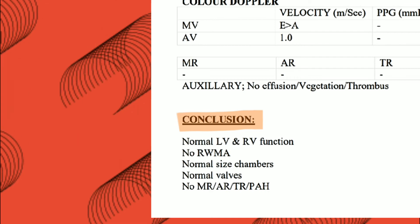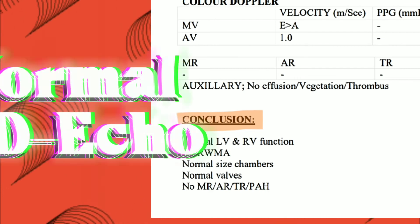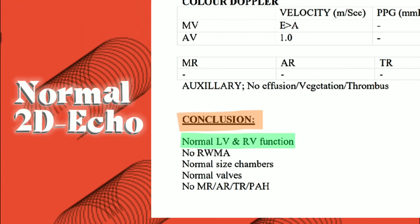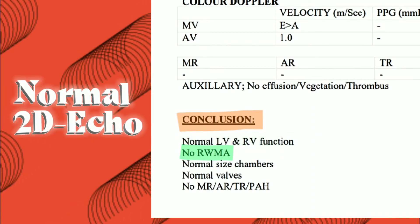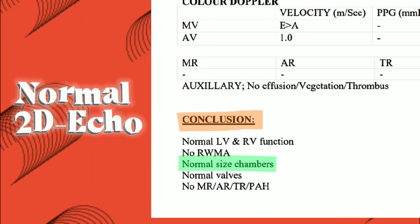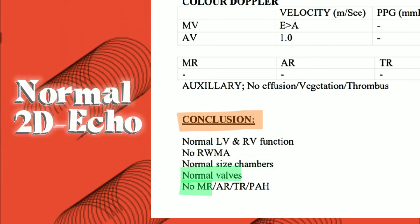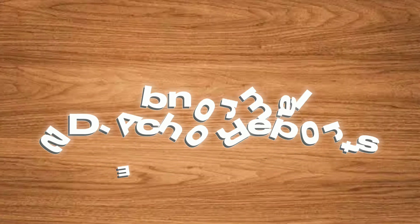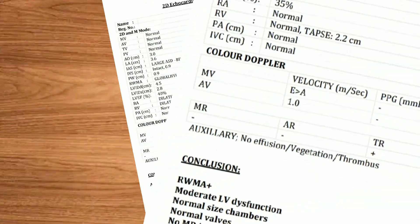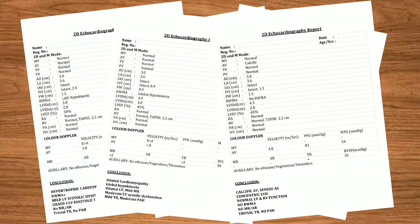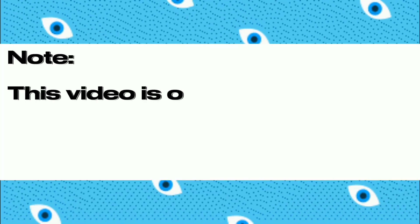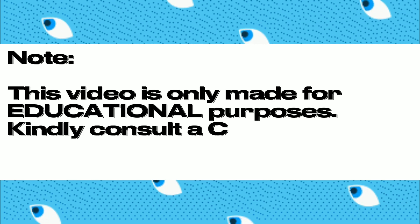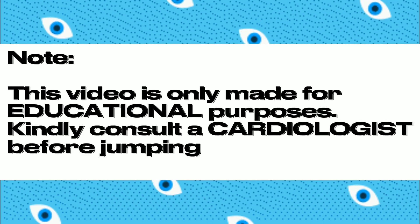Conclusion: if the 2D-Echo report is normal, then the conclusion will look like this — normal LV and RV function, no RWMA, normal size chambers, normal valves, no MR, AR, TR, and no pulmonary hypertension. If the 2D-Echo is not normal, then the conclusion will be written according to the report. Please note that this video is only made for educational purposes. Kindly consult a cardiologist before jumping to any conclusion.